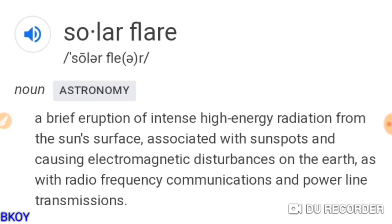A solar flare is a brief eruption of intense high-energy radiation from the sun's surface. It's not plasma — it's radiation. It is associated with sunspots and causes electromagnetic disturbances on Earth. Our magnetosphere is directly affected and it can cause disturbances to radio frequency communications and power line transmissions.